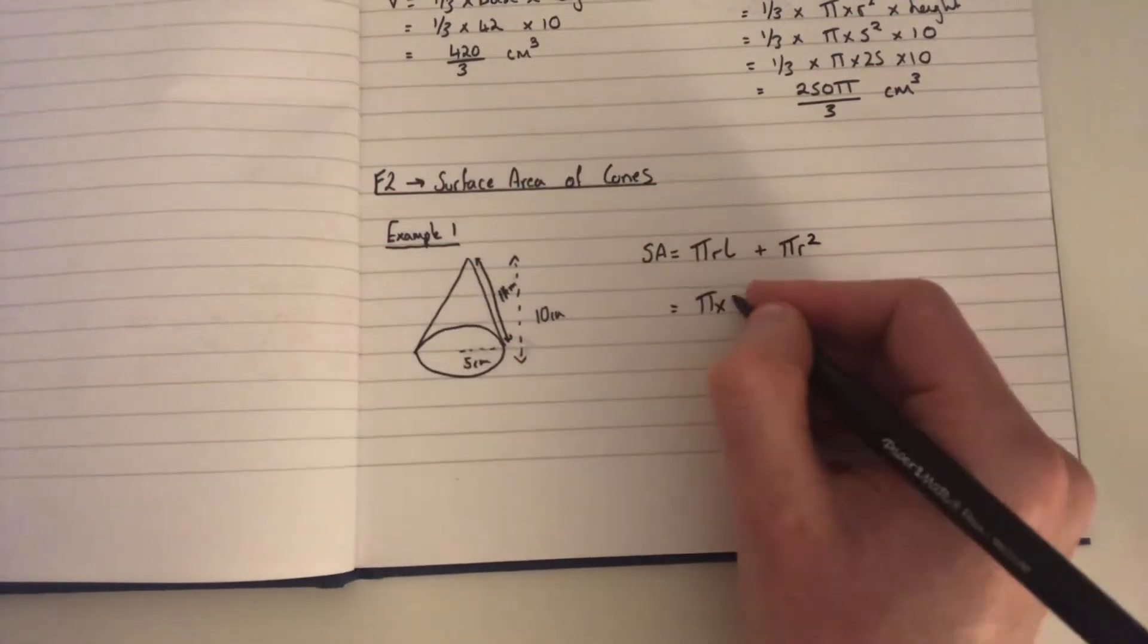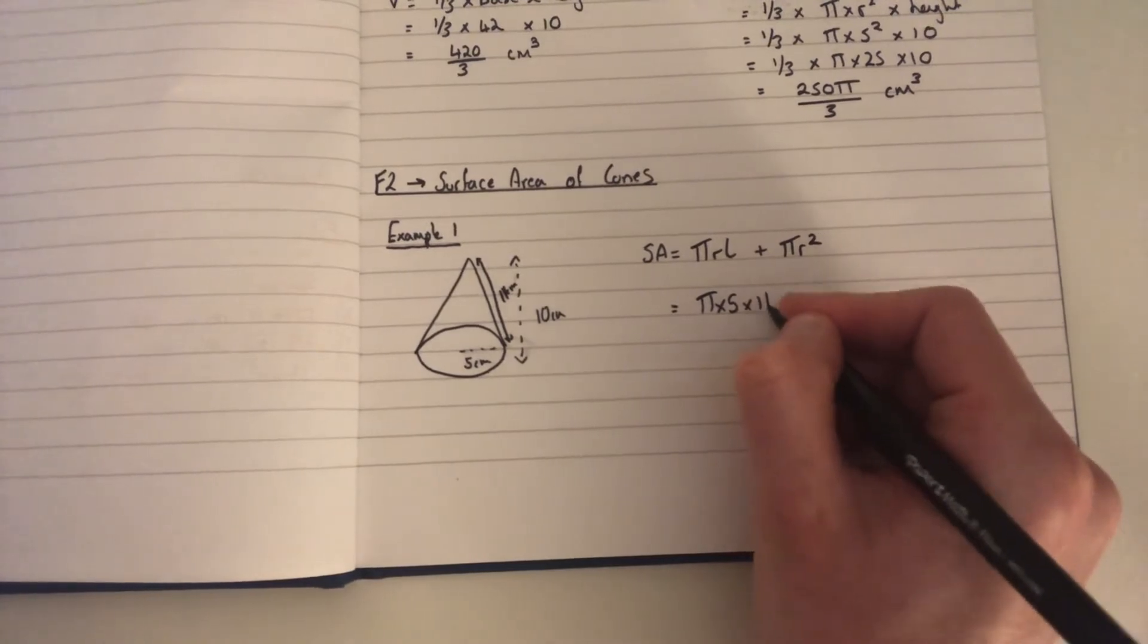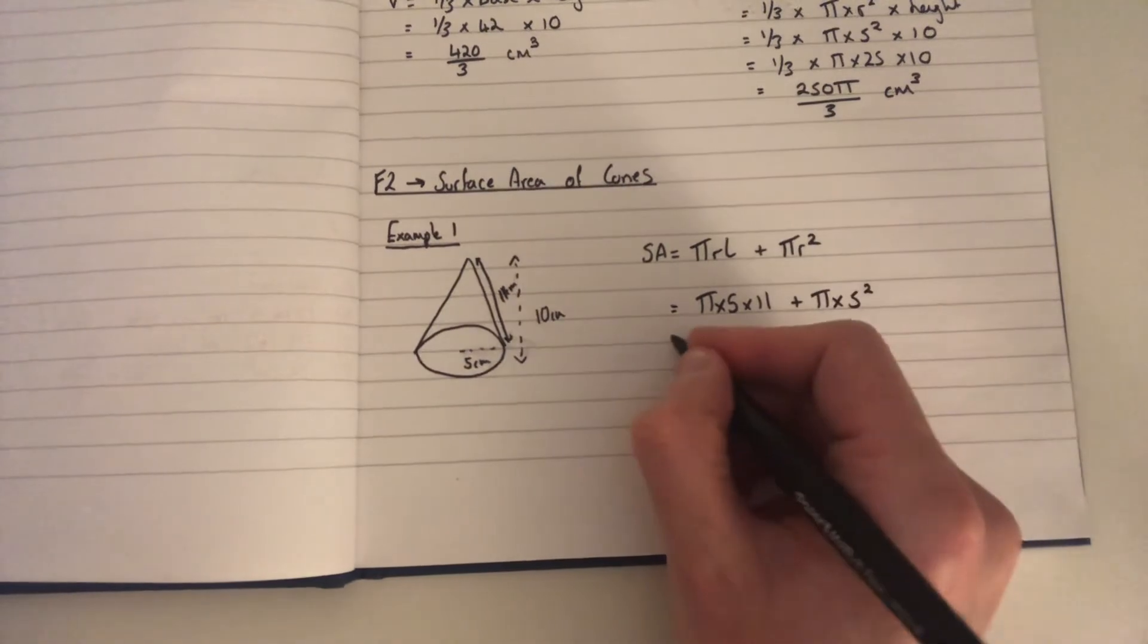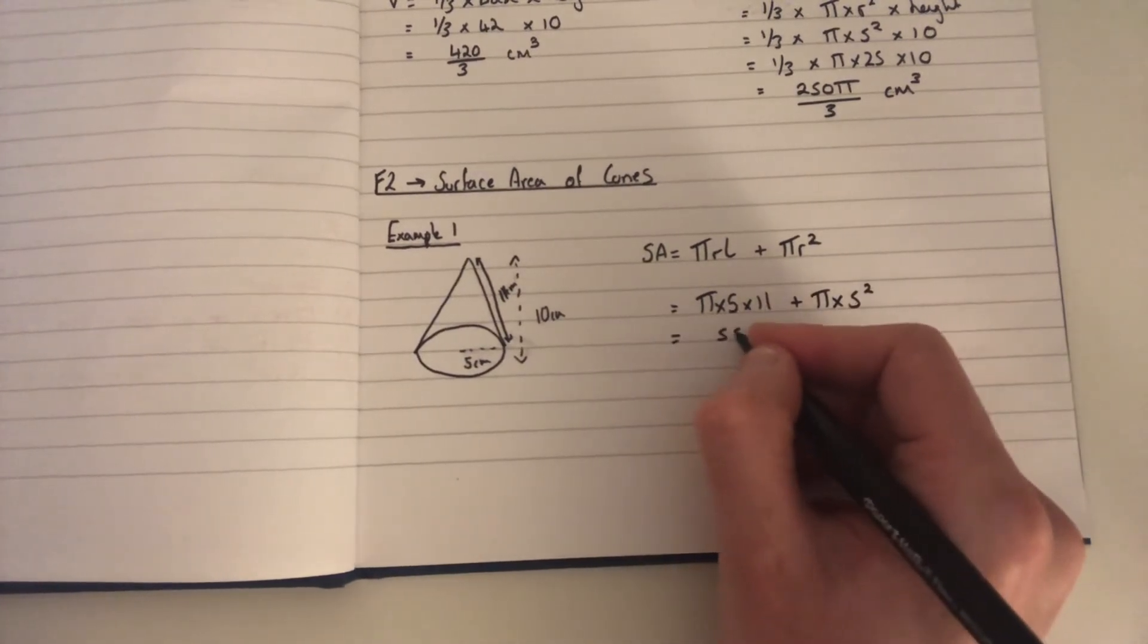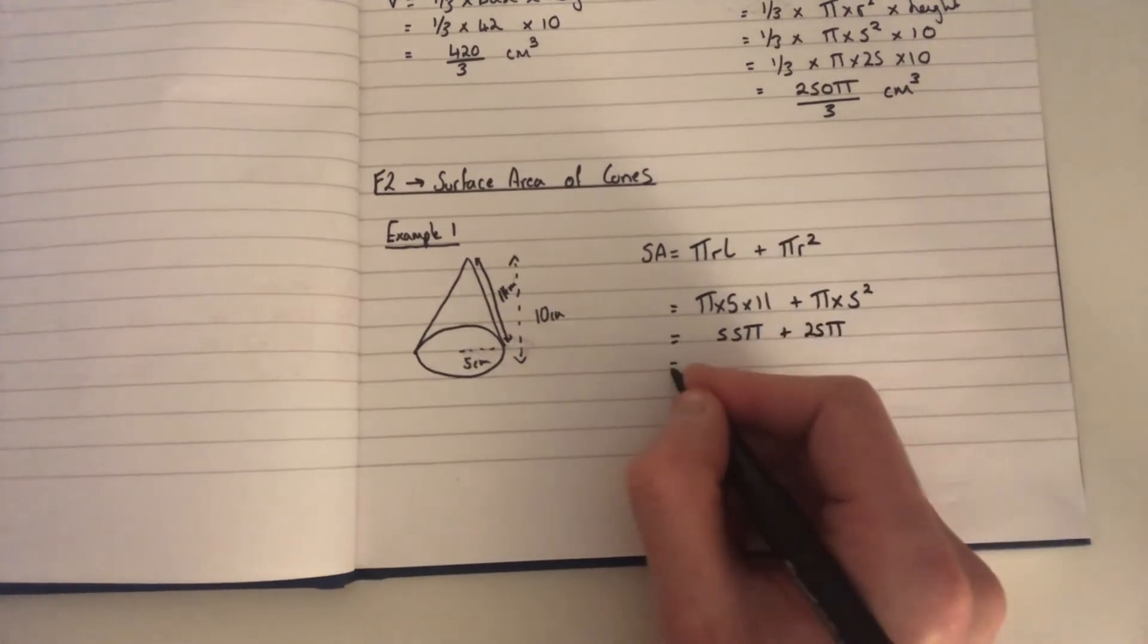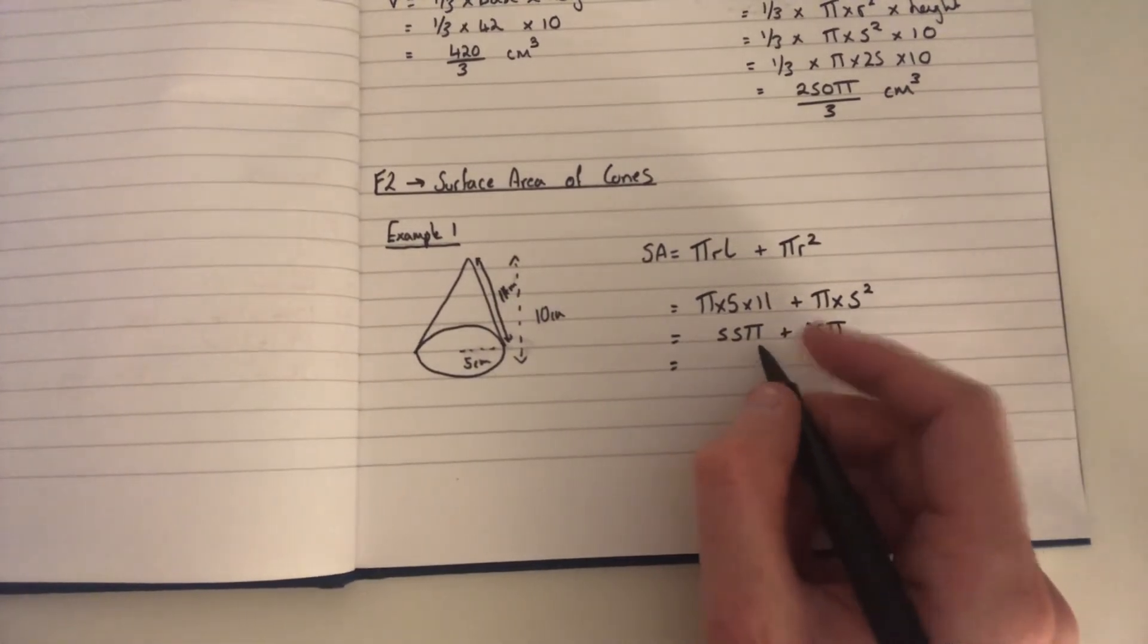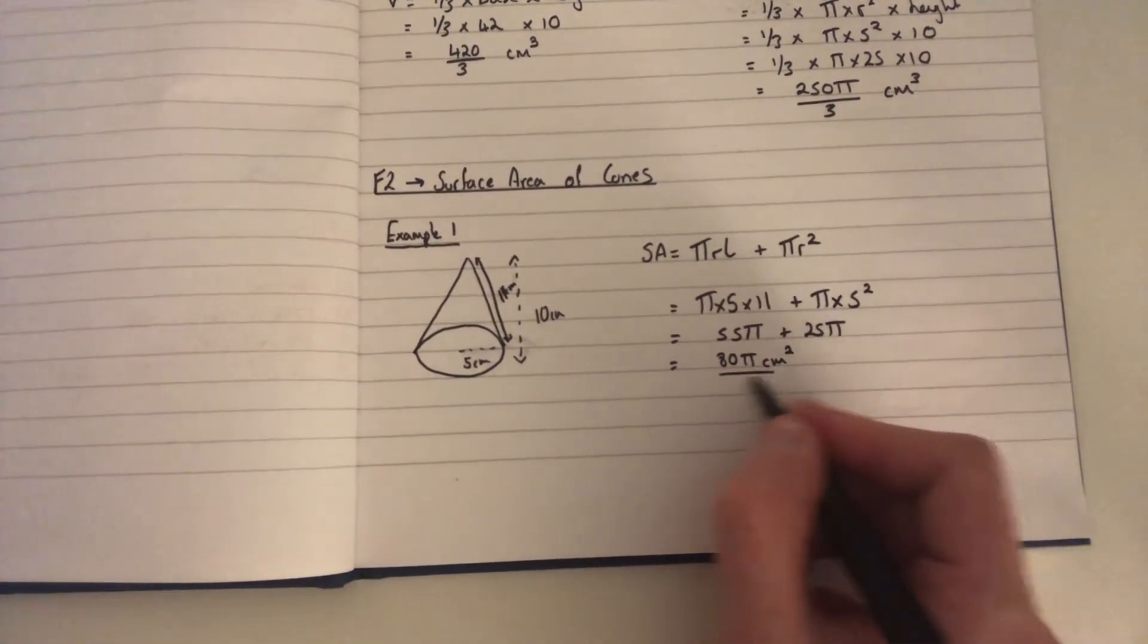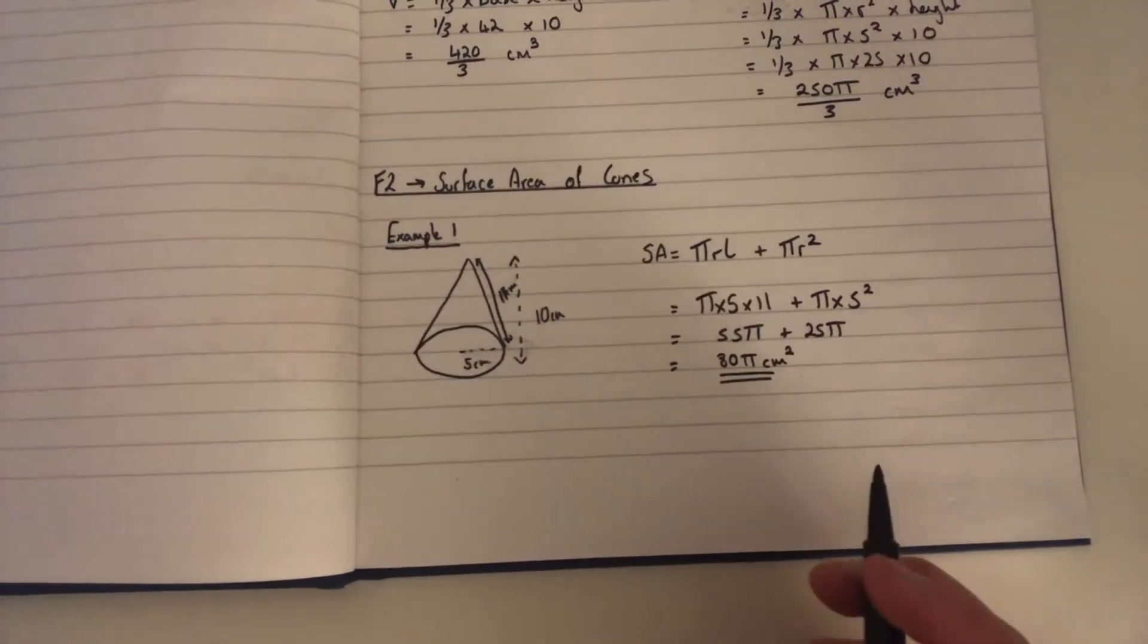times 5 times 11 plus π times 5 squared. So that would be 55π plus 25π, which gives us 80π centimeters squared because it is surface area.